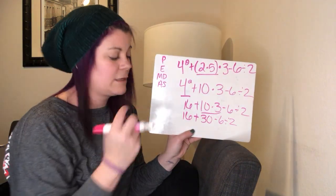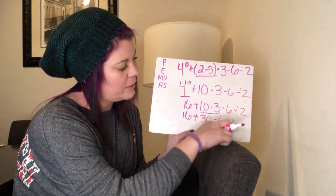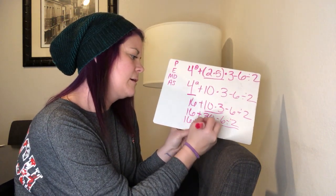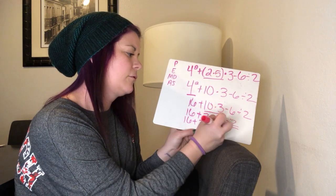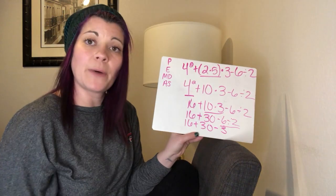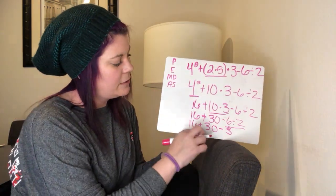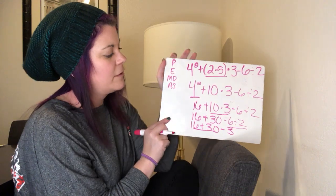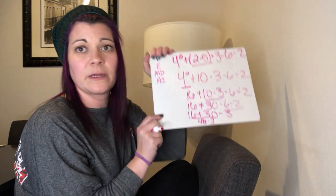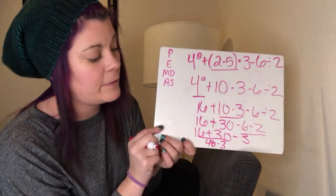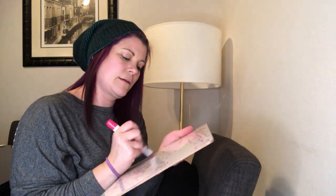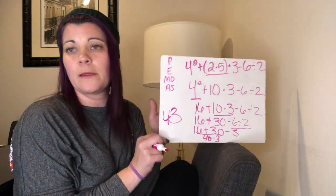Still on multiplication and division — scanning again. There's a division: six divided by two is three. So we have sixteen plus thirty minus three. Any more multiplication or division? Nope. Move down to addition and subtraction from left to right. There's addition: sixteen plus thirty is forty-six. Bring down minus three. Forty-six minus three is forty-three. So the answer is forty-three.